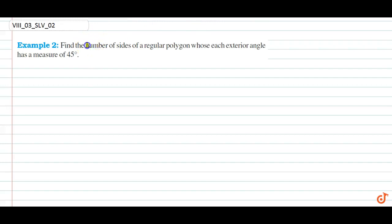In this question we have to find the number of sides of a regular polygon whose each exterior angle is of measure 45 degrees. When we know that sum of all exterior angles is 360 degrees.